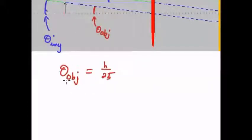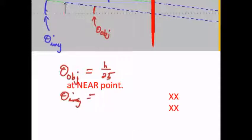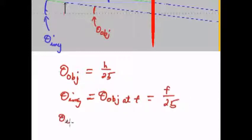So the magnification of the, or the, so the theta of the object we've already determined was h over 25, but the theta of the image in this case is going to be equal to the theta of the object at focal point. So that would be equal to f over 25. So the theta image over theta object, it's the magnification, relaxed magnification, or infinite, basically getting the image distance at infinity.